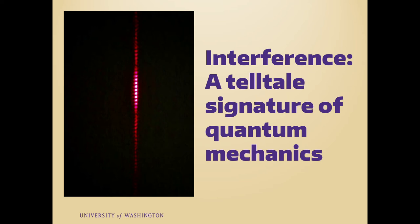He then put the closely spaced slits into the laser beam. The light is again spread out, but now there is a stripey pattern. The stripey pattern is called interference and is a tell-tale signature of quantum mechanics.